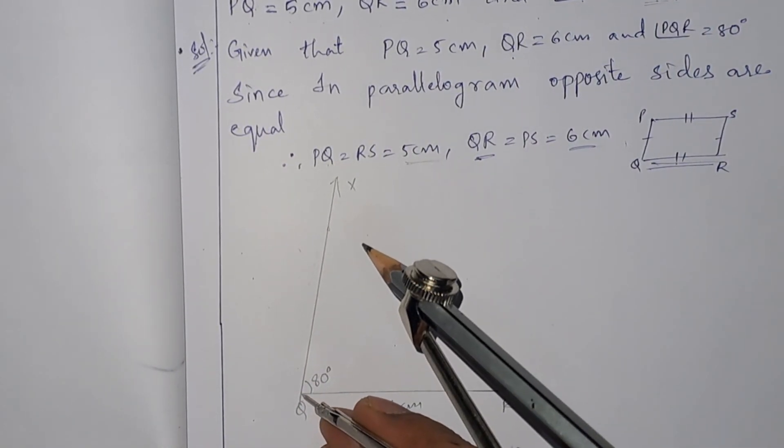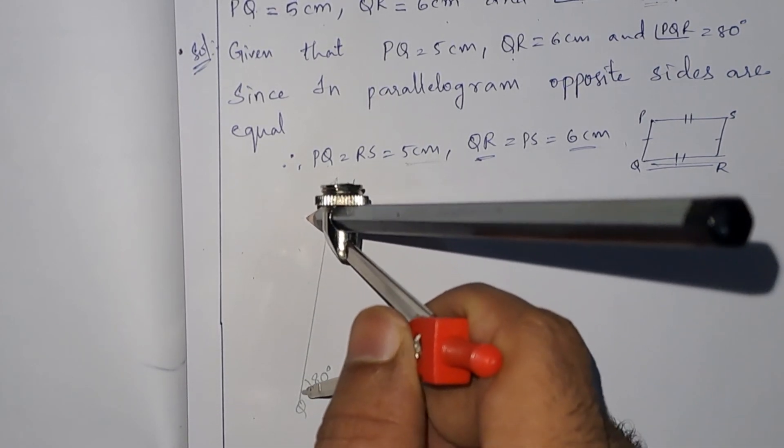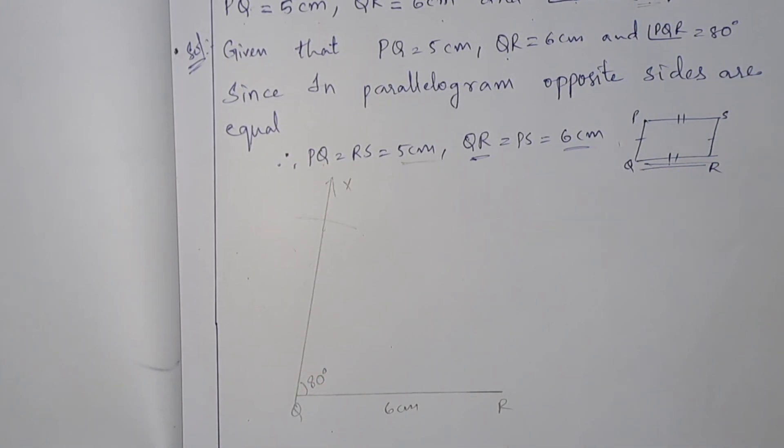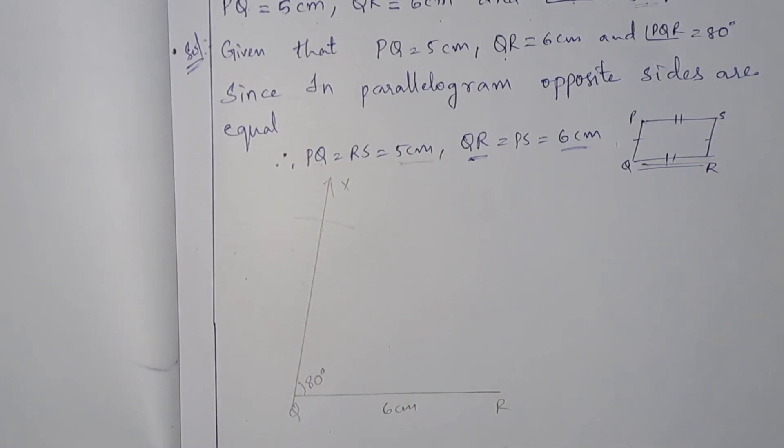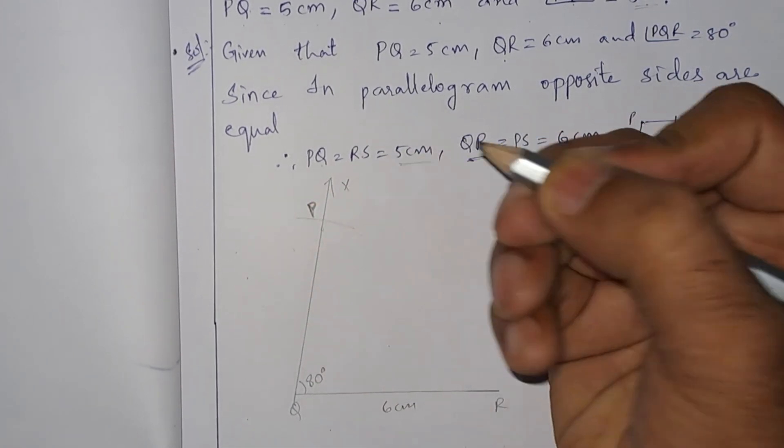From Q, let Q be the center with radius 5 centimeters. Let us draw an arc which cuts the ray. The point at which it cuts will be P.